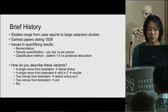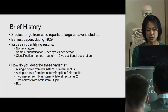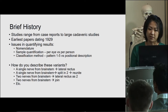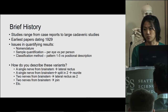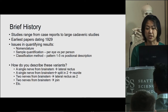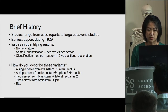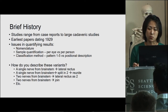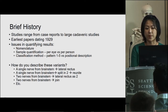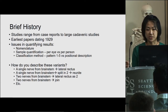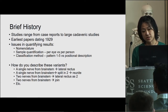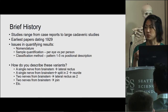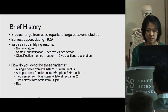There's also an issue with sample quantification. Certain authors use per eye versus a per person approach to count the variations they see. As well, certain authors use classifications that differ from one another. One study uses designated patterns — naming them pattern 1 to 5 — whereas another study uses positional descriptions to describe the variations they see.